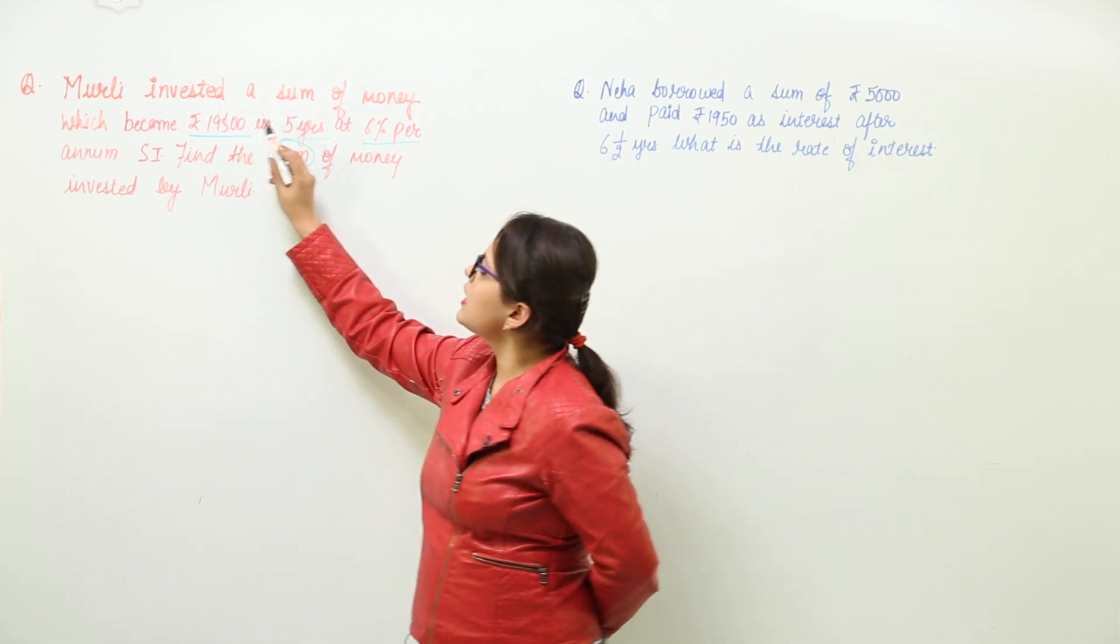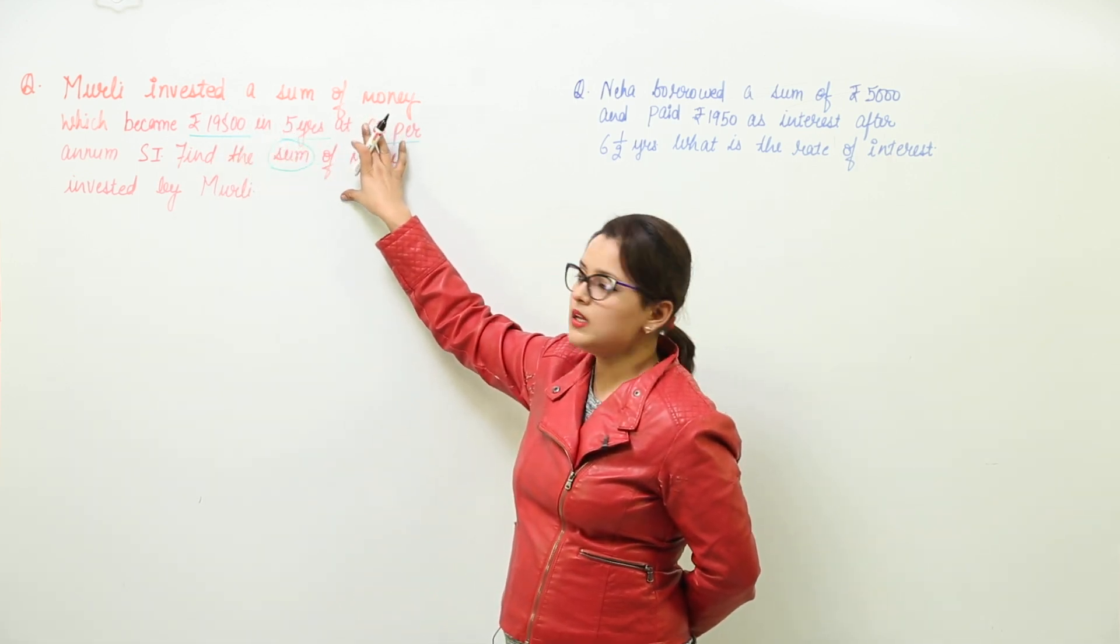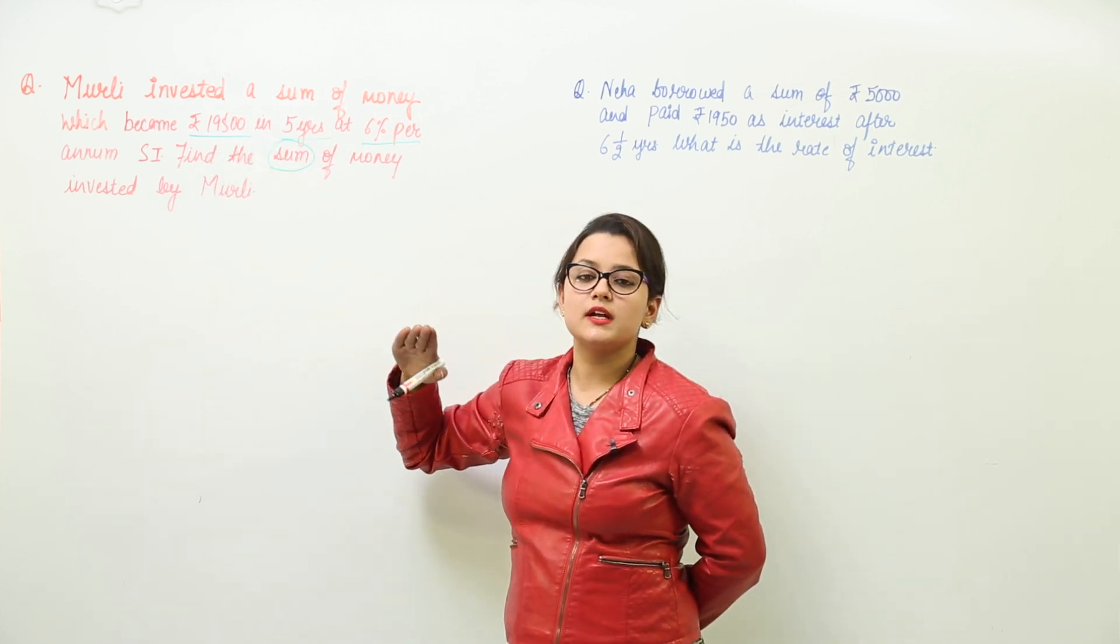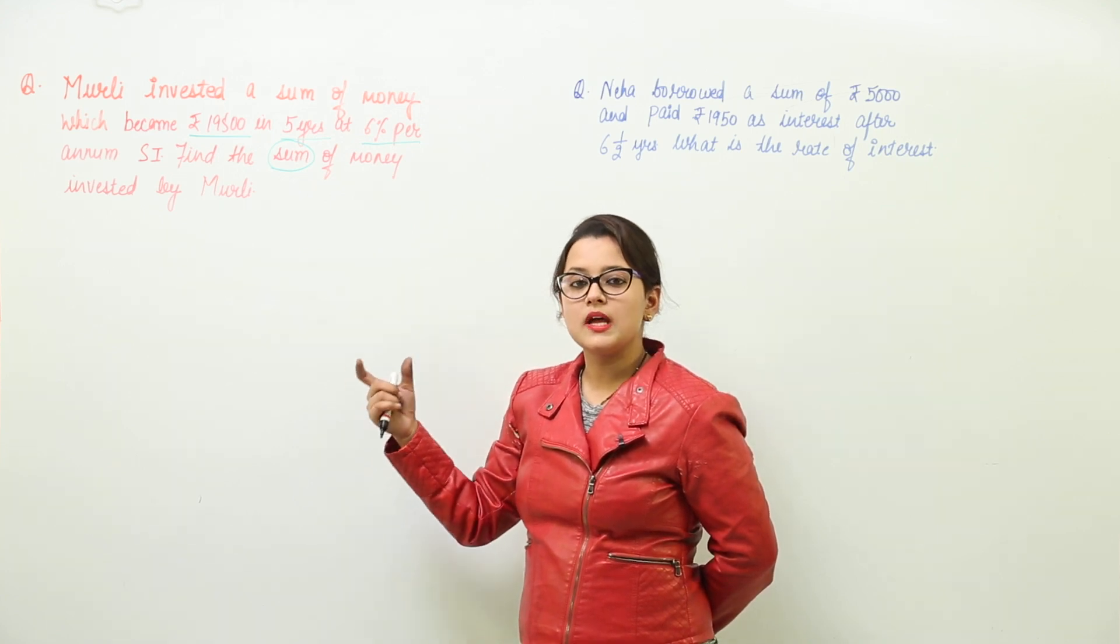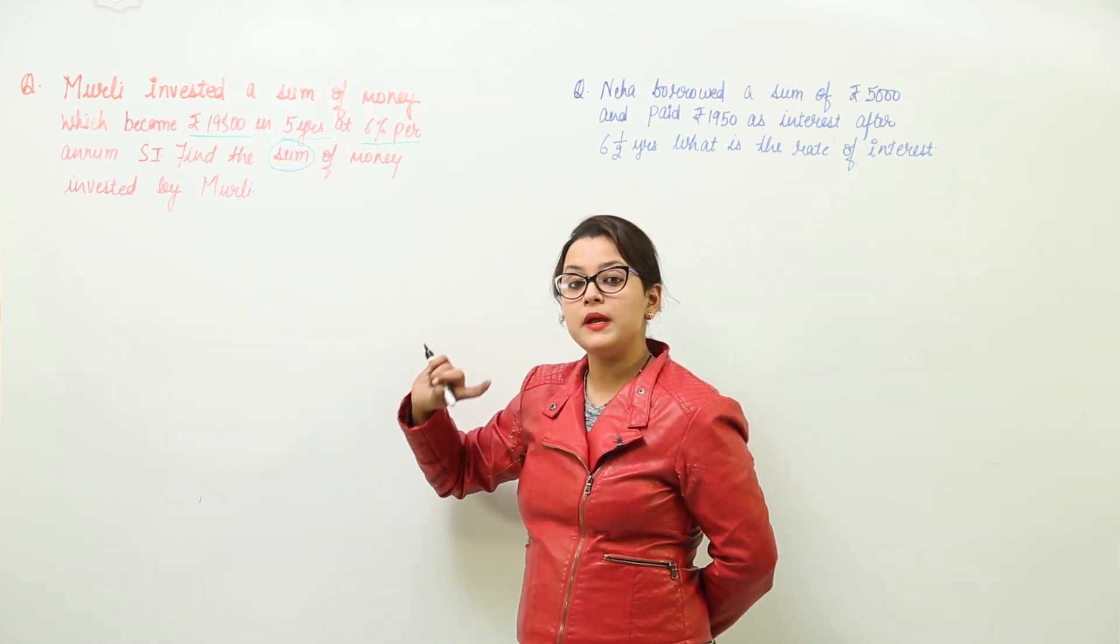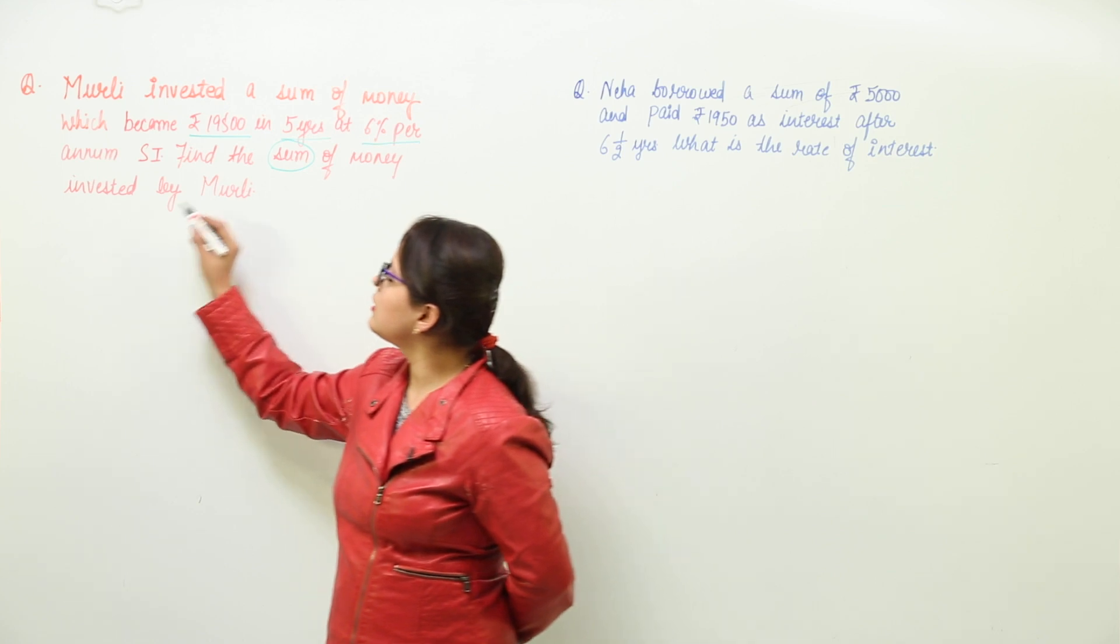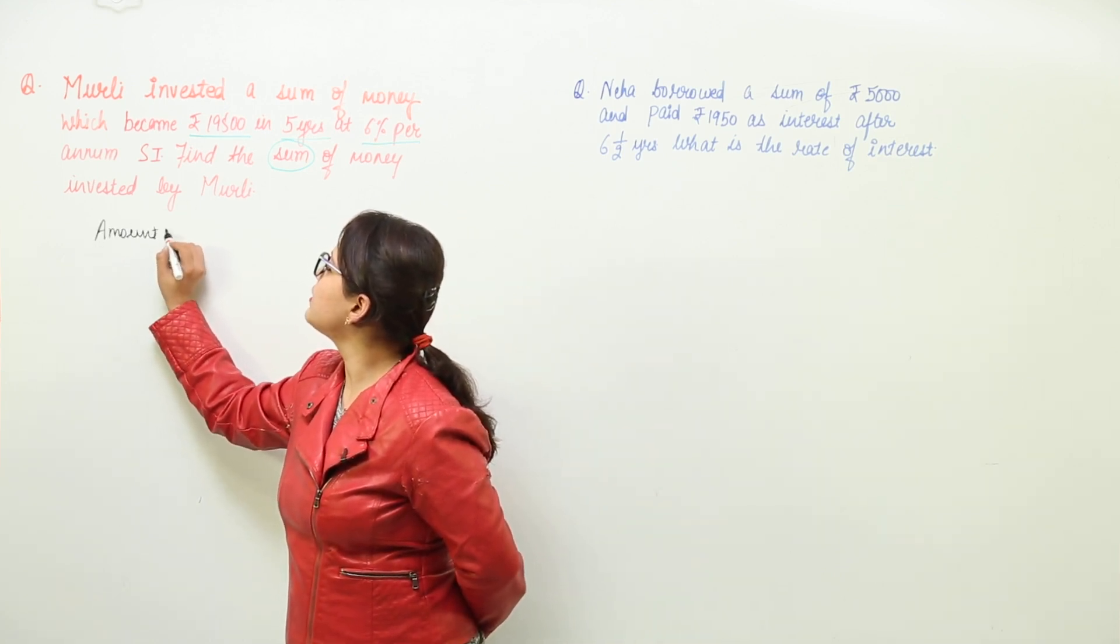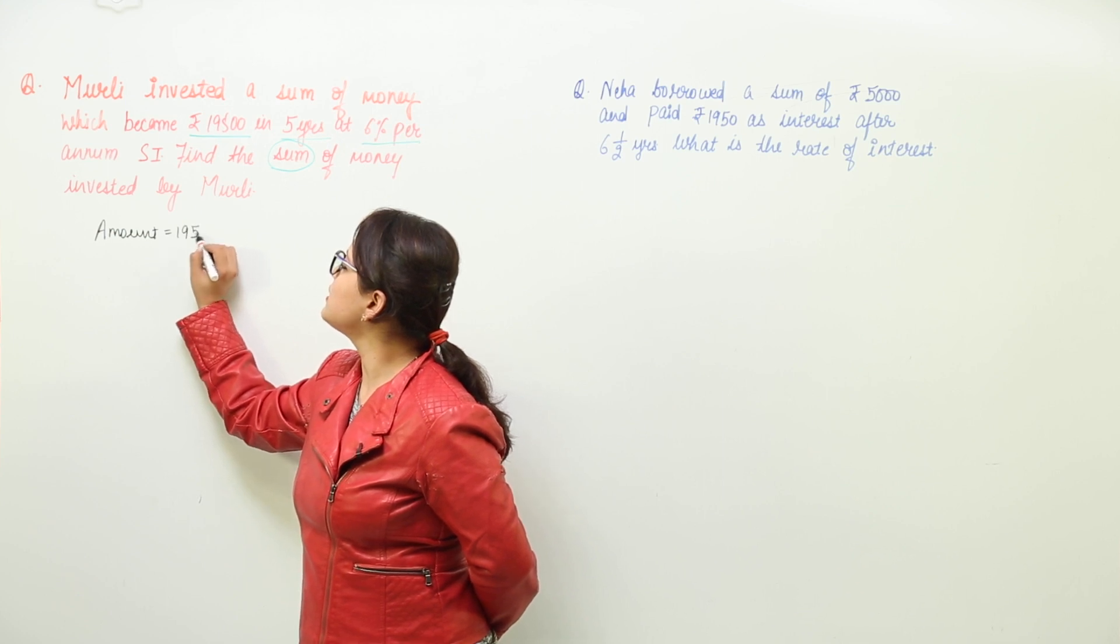Now this is saying he had invested sum of money which became 19,500 in 5 years. That means this is the amount that has been calculated after 5 years. So 19,500 is the amount he paid. So you write down amount is equal to 19,500.